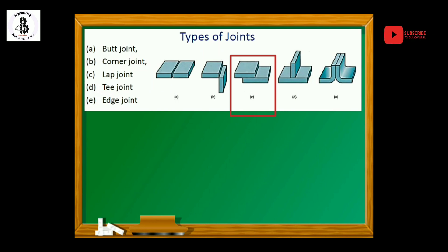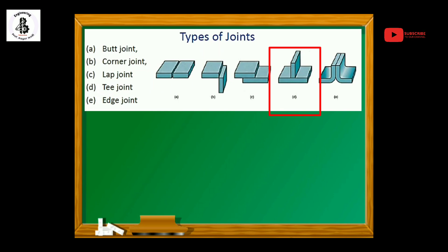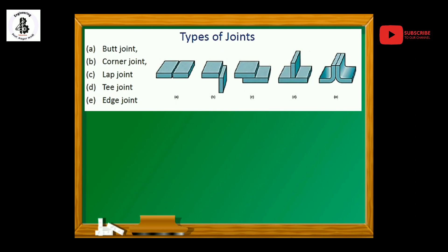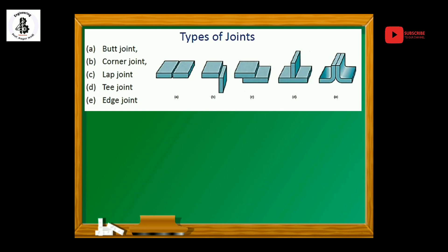In some applications, one plate rests on the ground and another plate is placed over it as shown in the figure, making a T-shaped cross-sectional area — that joint is known as a T joint. Finally, if you want to join two edges of plates as per the given figure, that will be known as an edge joint.